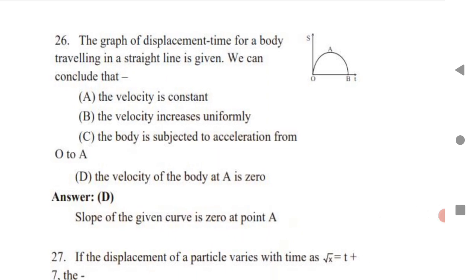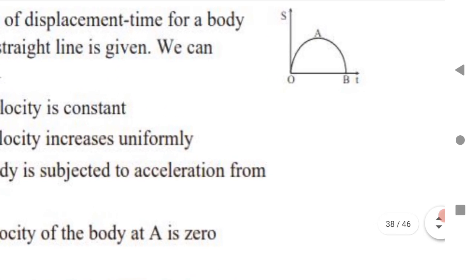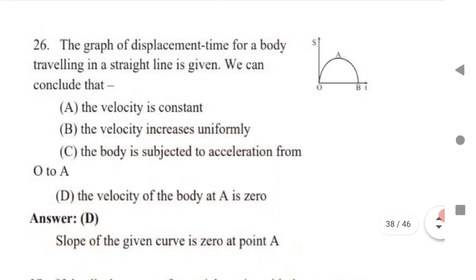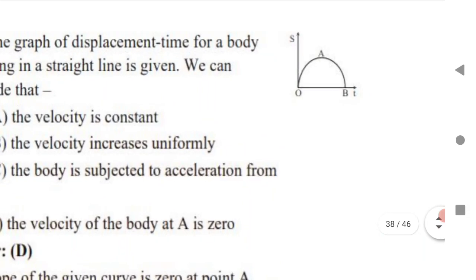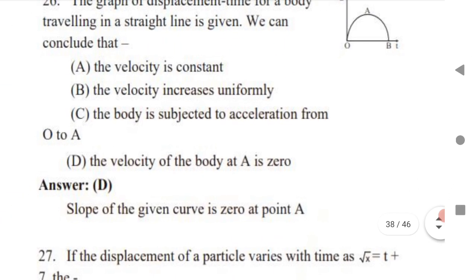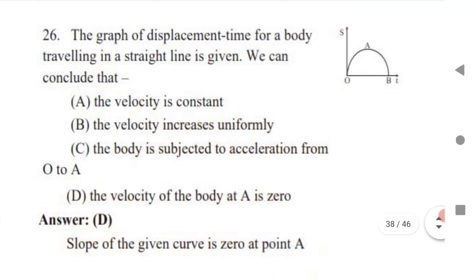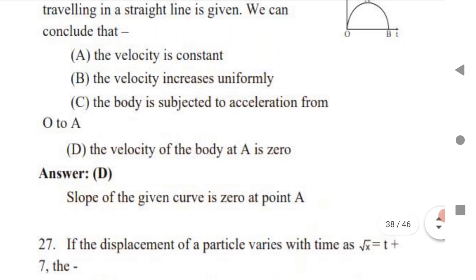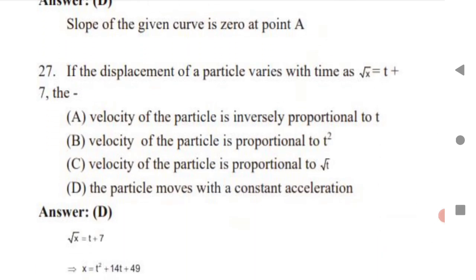Next question: a displacement-time graph for a body traveling in a straight line is given. When you see this graph — suppose it's a semicircle — point A is where the velocity is zero, because the body is stopping at A. Checking the option where A is given as zero: yes, velocity at A is zero.